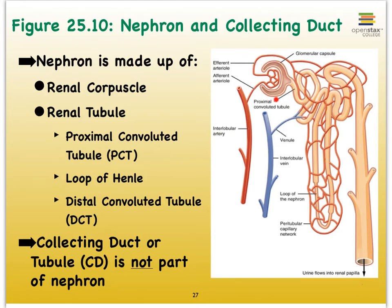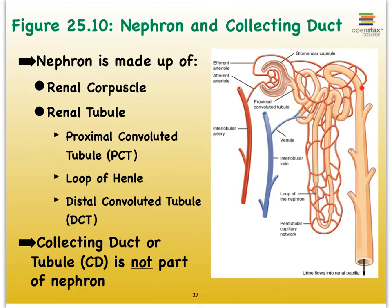The renal corpuscle consists of a baseball glove-shaped structure called the glomerular capsule or the Bowman's capsule, with a capillary bed in the center. Within the renal tubule we see three different regions: the proximal convoluted tubule, which is directly connected to the renal corpuscle; then the proximal convoluted tubule, abbreviated PCT, straightens out as we enter the medulla — we refer to this as the loop of Henle. The loop of Henle comes back out of the medulla into the cortex, forming another squiggly tubule called the distal convoluted tubule, because it sits more distally from our corpuscle. And then there is your collecting duct.